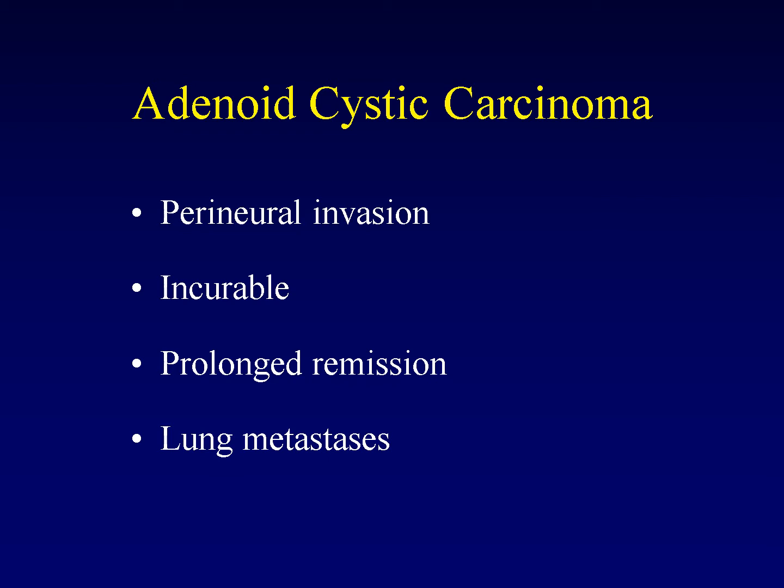The good news is that there can be a prolonged remission of adenoid cystic carcinoma — and by prolonged, I mean decades. In breast cancer, for example, 10 years of no disease and you're presumed to be cured. But that is not true of adenoid cystic carcinoma. At 10 years you've still got the disease, and it is still almost certain to recur — but the remission can be 10, 20, or 30 years before recurrence, usually as lung metastases.